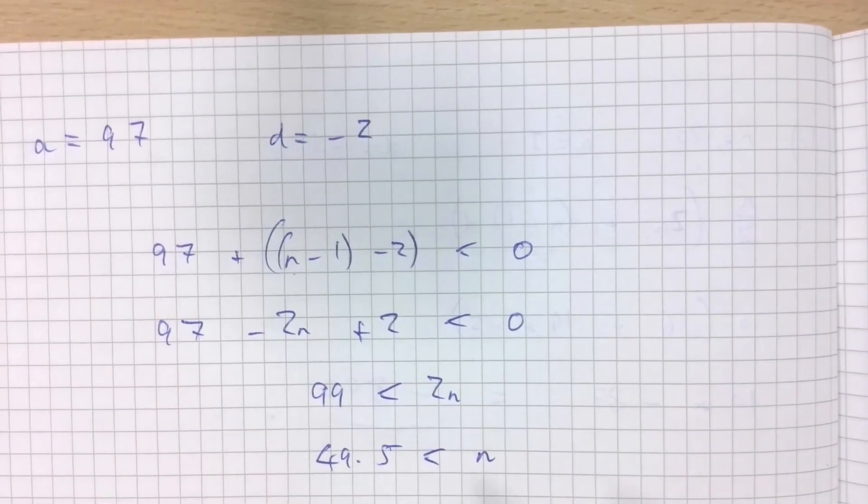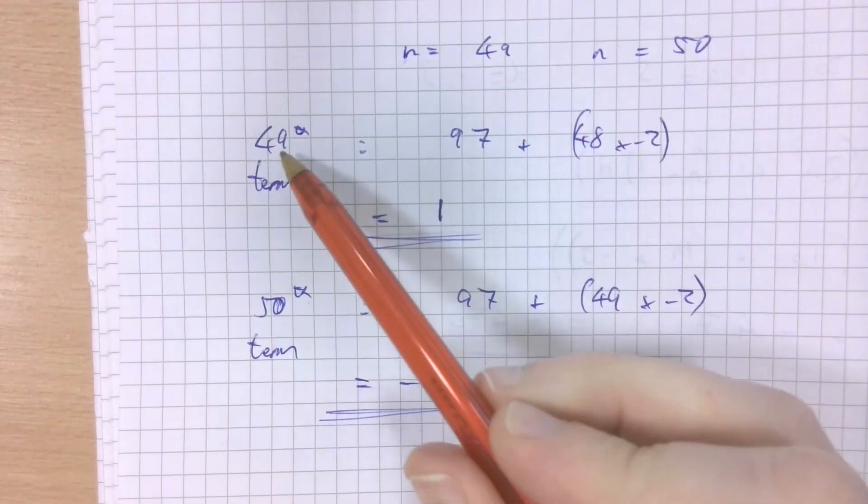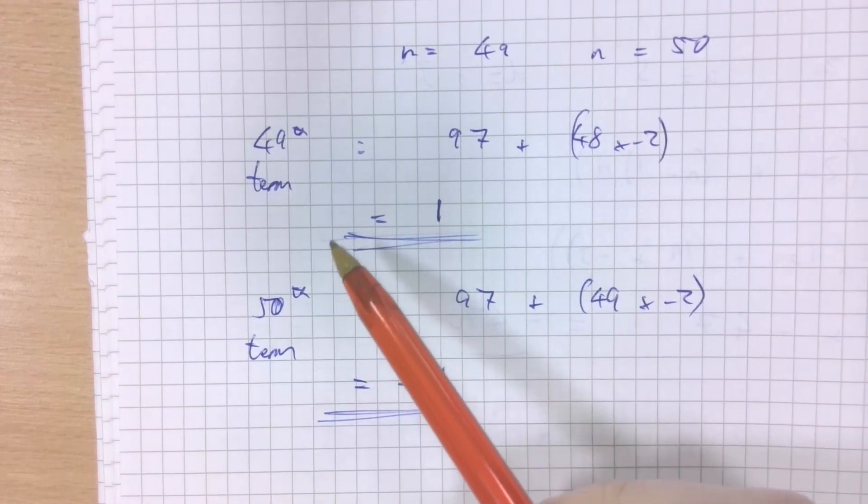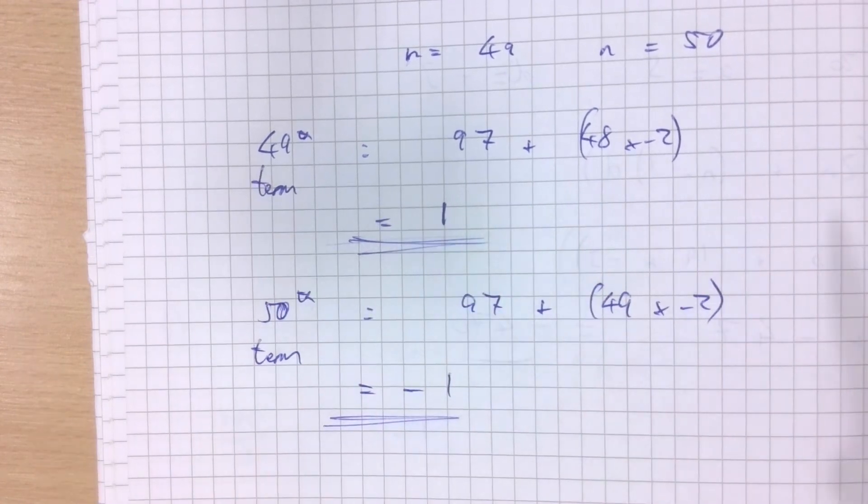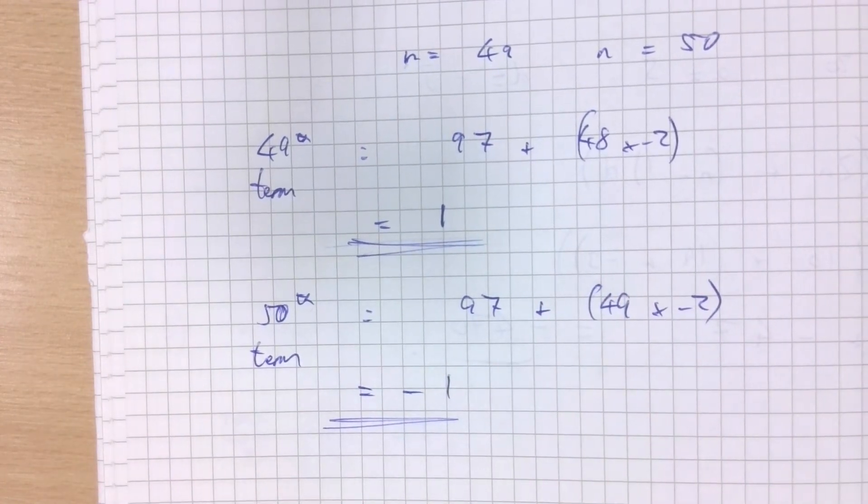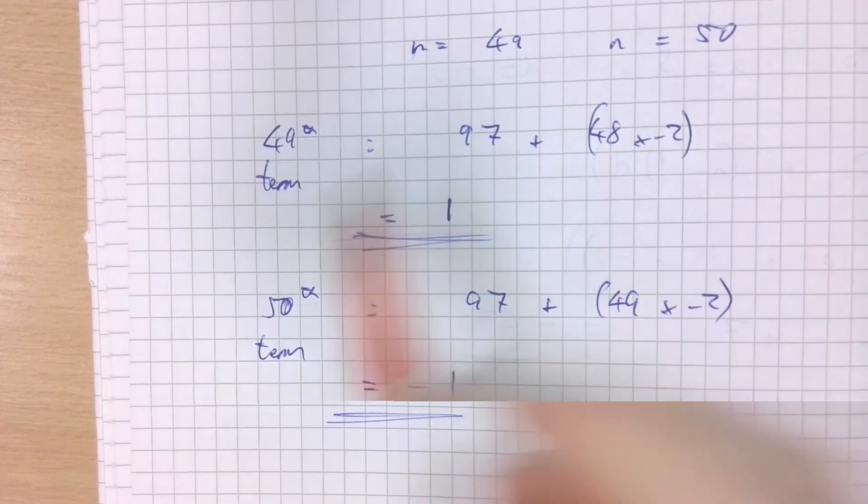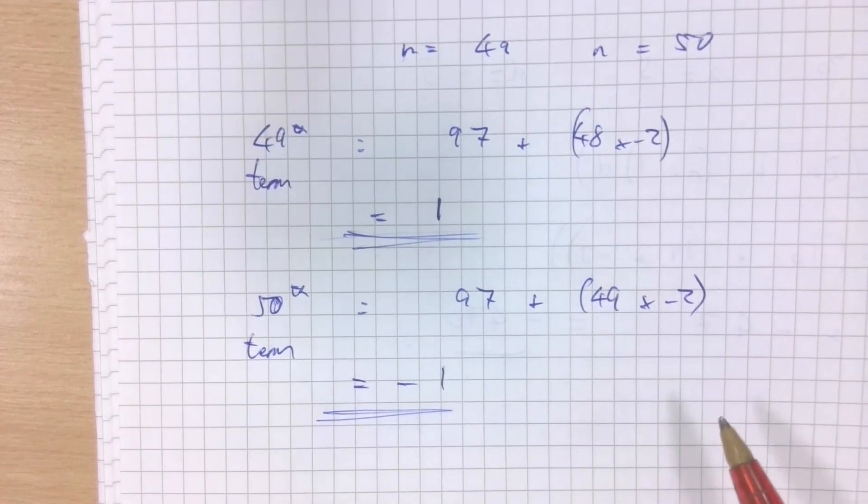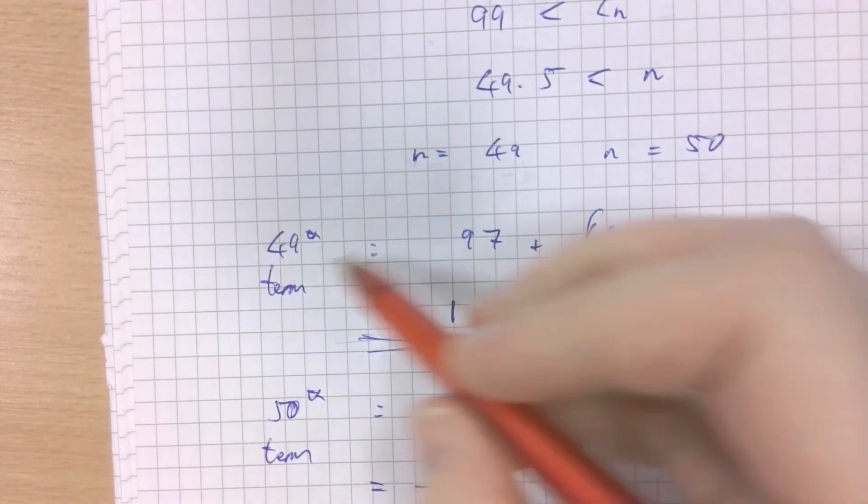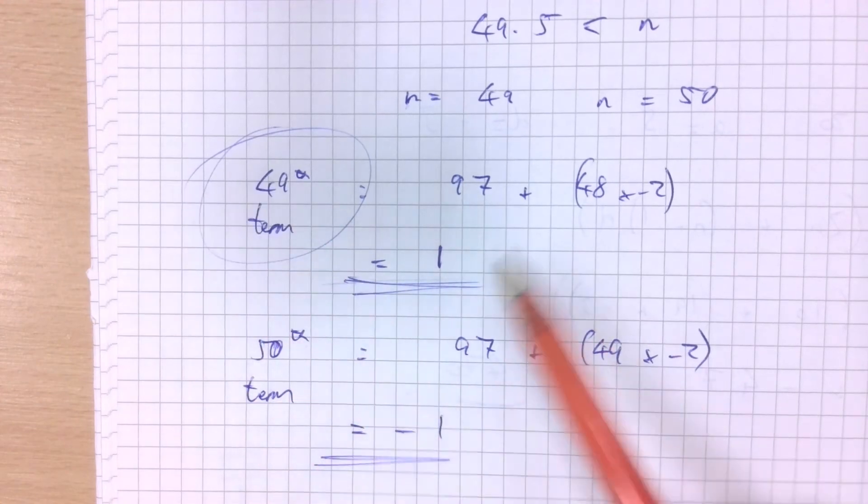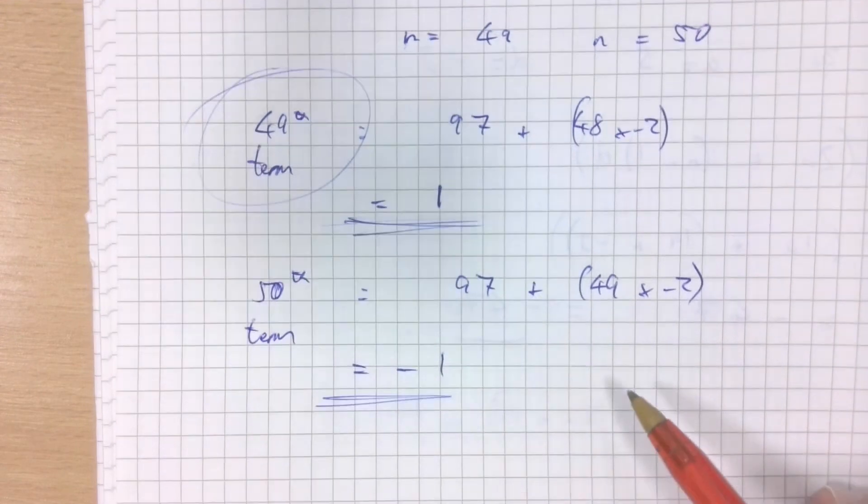If you didn't really understand what I was doing up here, don't panic. This is the crux of the question. If the 49th term is positive and the 50th term is negative, that means the sum of the first 49 terms is going to be continually adding positive numbers from 97 to 1, with a difference of 2 between each. As soon as I begin adding the 50th term onwards, the total sum is going to start decreasing.